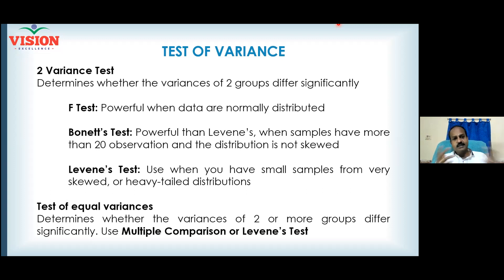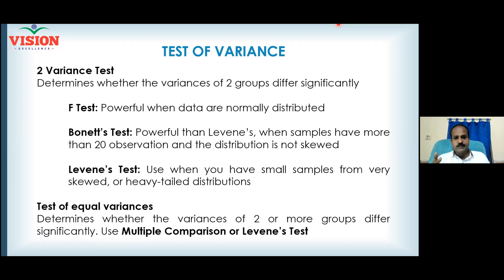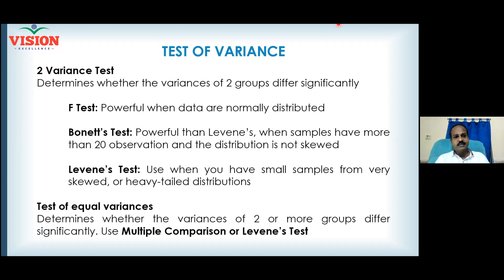Whether the variances are equal or unequal, you have a test of variance to determine that. You can study two groups or more than two groups. When you are studying the variance of two groups, there are three options: F-test, Bonnet's test, and Levene's test.